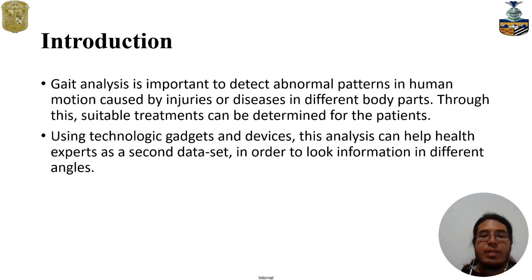As an introduction, we are going to start talking about gait analysis and why it is important. This analysis is important because we can detect any abnormal pattern in human motion caused by any injury or disease that can affect different body parts like arms, wrists, ankles, legs, knees, etc.